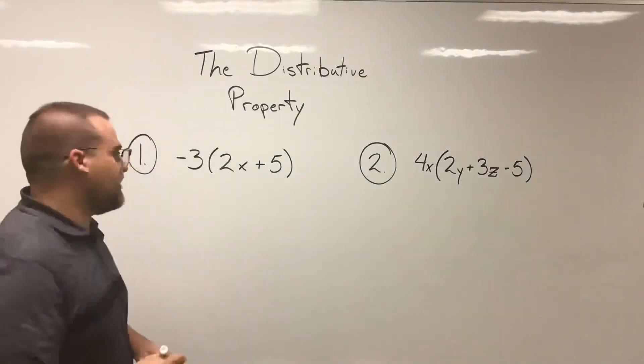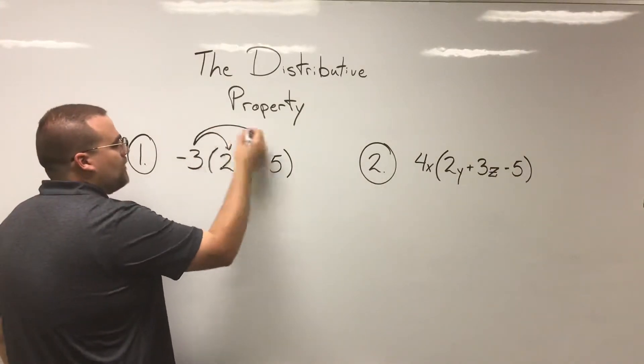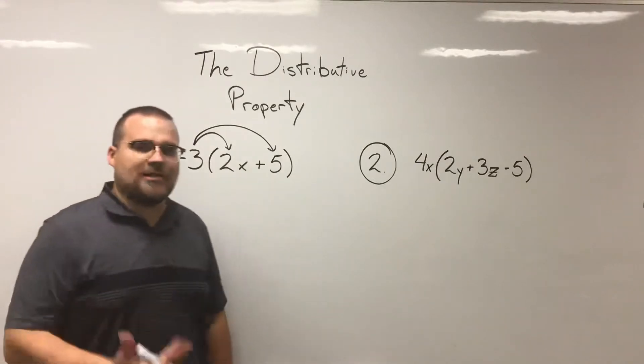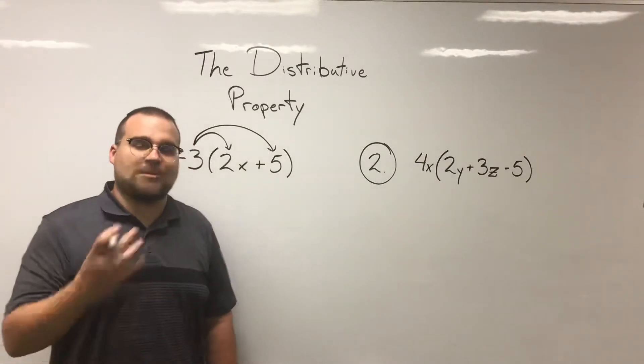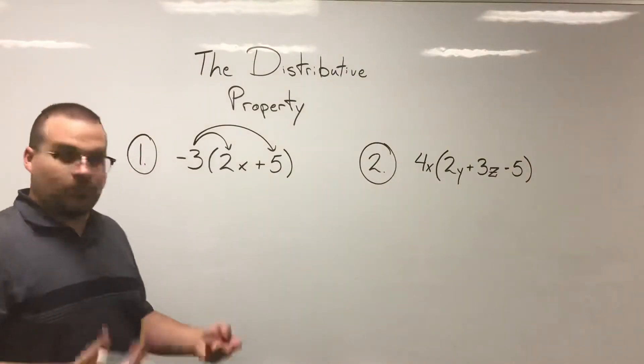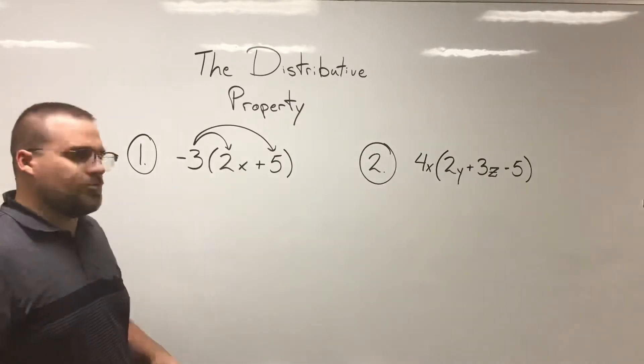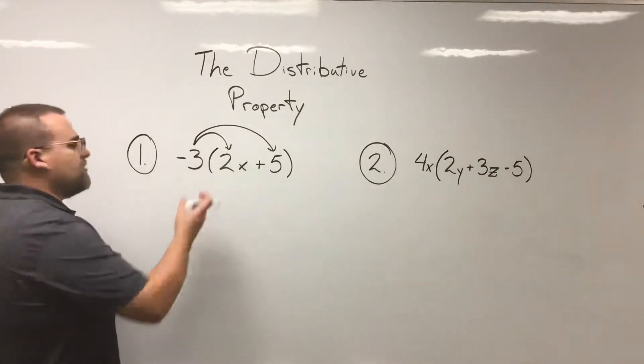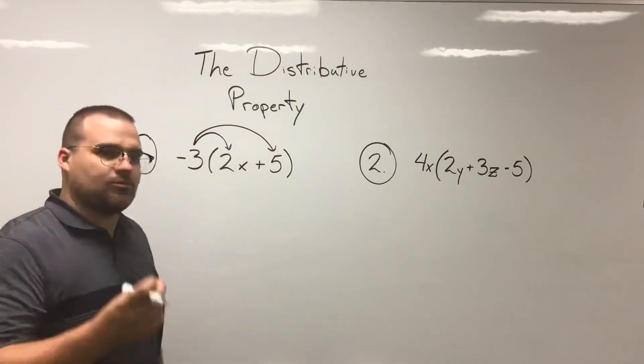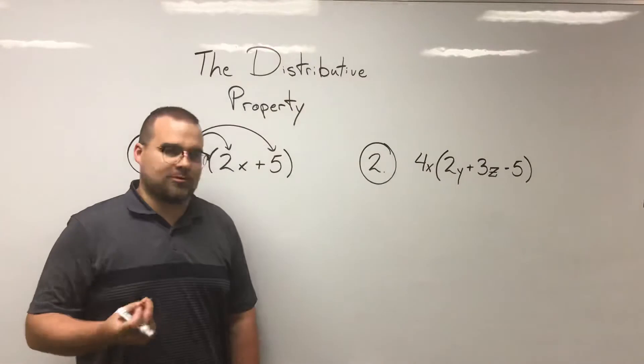So this negative three is going to multiply both of these terms, and we're going to be able to simplify the expression by simply making it the products of these two multiplications. This negative three is going to distribute to or multiply with the 2x. As you recall, the whole numbers will multiply, and then any variables there will multiply as well.